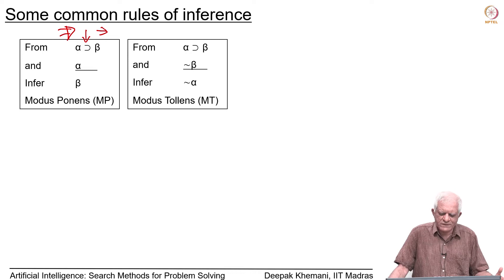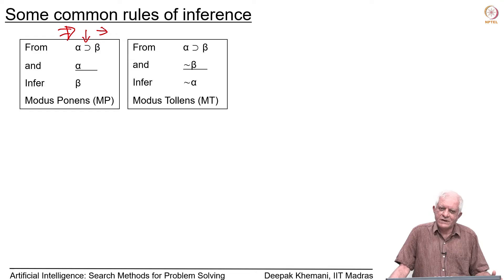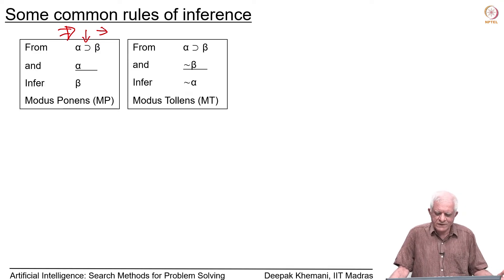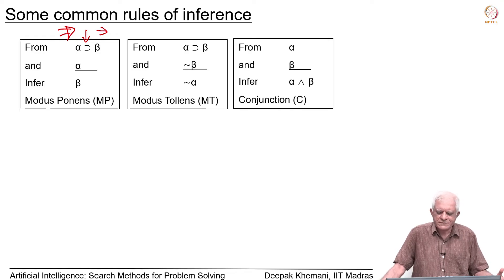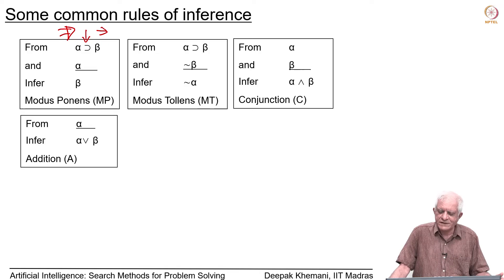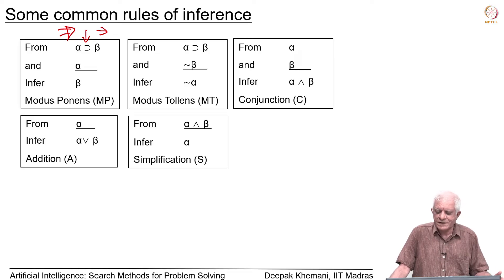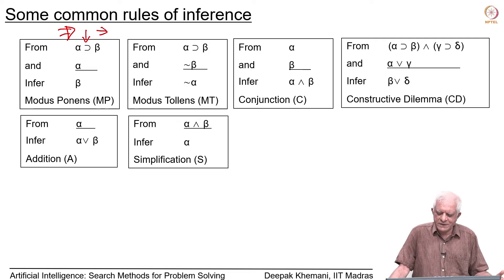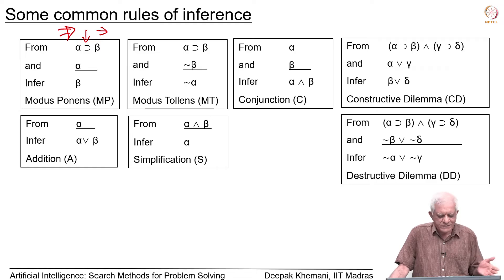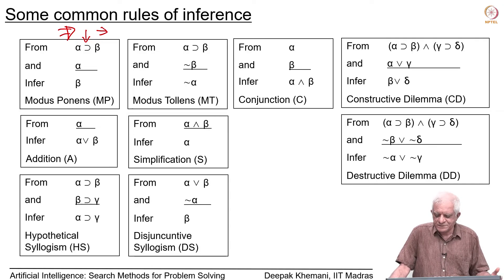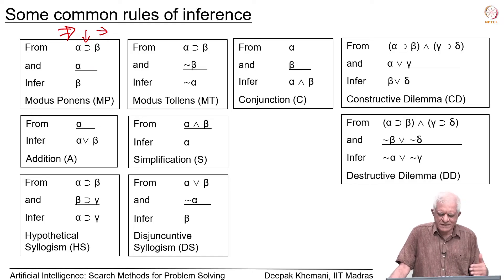Another one is modus tollens, which is the converse of modus ponens. It says that if you are given alpha implies beta, and if you are given that not-beta is true, then you are forced to conclude that not-alpha is true, and you can add it to your knowledge base. Then there are many others — conjunction, addition, simplification, constructive dilemma, destructive dilemma, hypothetical syllogism, disjunctive syllogism, and so on.